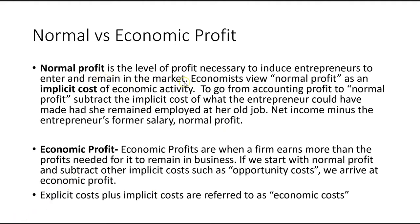Normal profit is the level of profit necessary to induce entrepreneurs to enter and remain in the market. Economic profit is when a firm earns more than the profits needed to remain in business. Starting with normal profit and subtracting other implicit costs such as opportunity costs gives us economic profit. Economic profit is the lowest of the three, as it accounts for all implicit costs plus all explicit costs — together called economic costs.